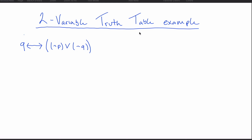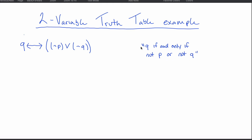These truth table questions can be written a variety of different ways. I think the two most common are symbolically, like you see here, or more in English, where this is translated to 'Q if and only if not P or not Q.' The English language lacks a little bit in specificity, so the symbolic way is actually preferable, but the English way might be more common, so I wanted to show both ways.